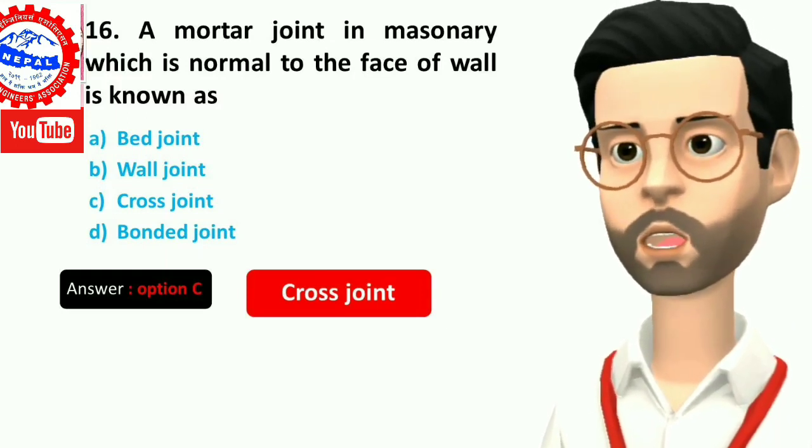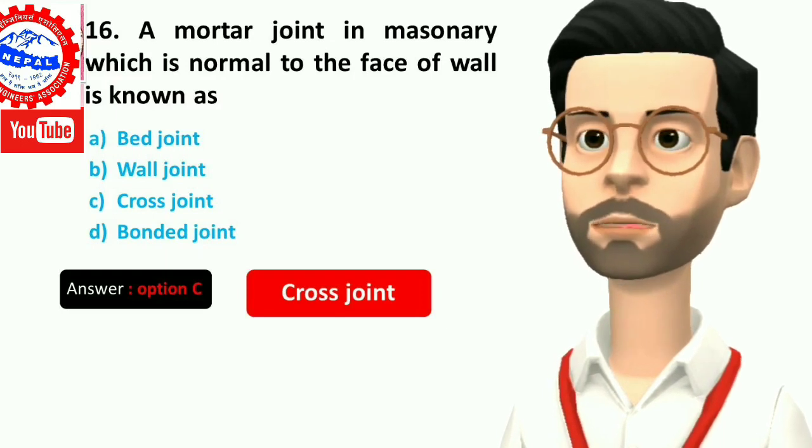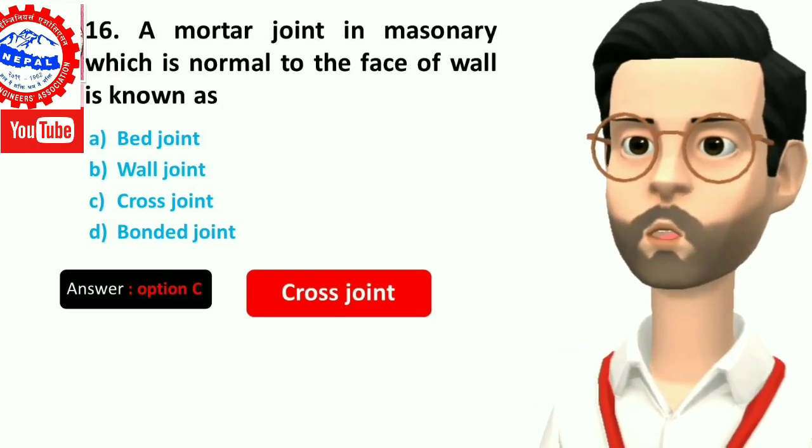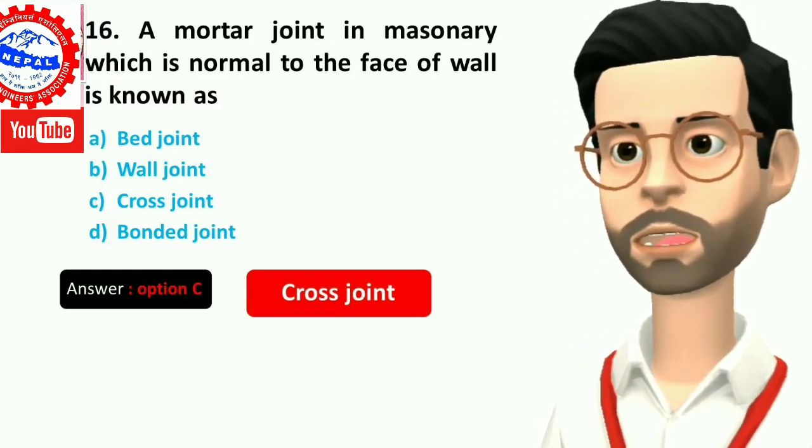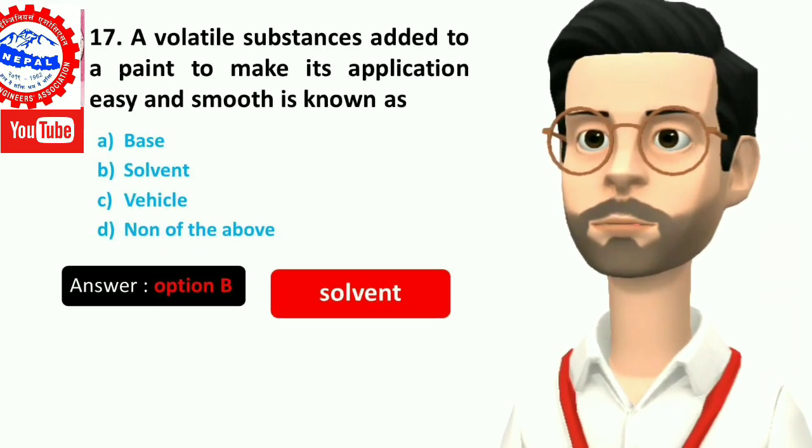Sixteen, a mortar joint in masonry which is normal to the face of wall is known as: A) bed joint, B) wall joint, C) cross joint, D) bonded joint. Answer is option C, cross joint.